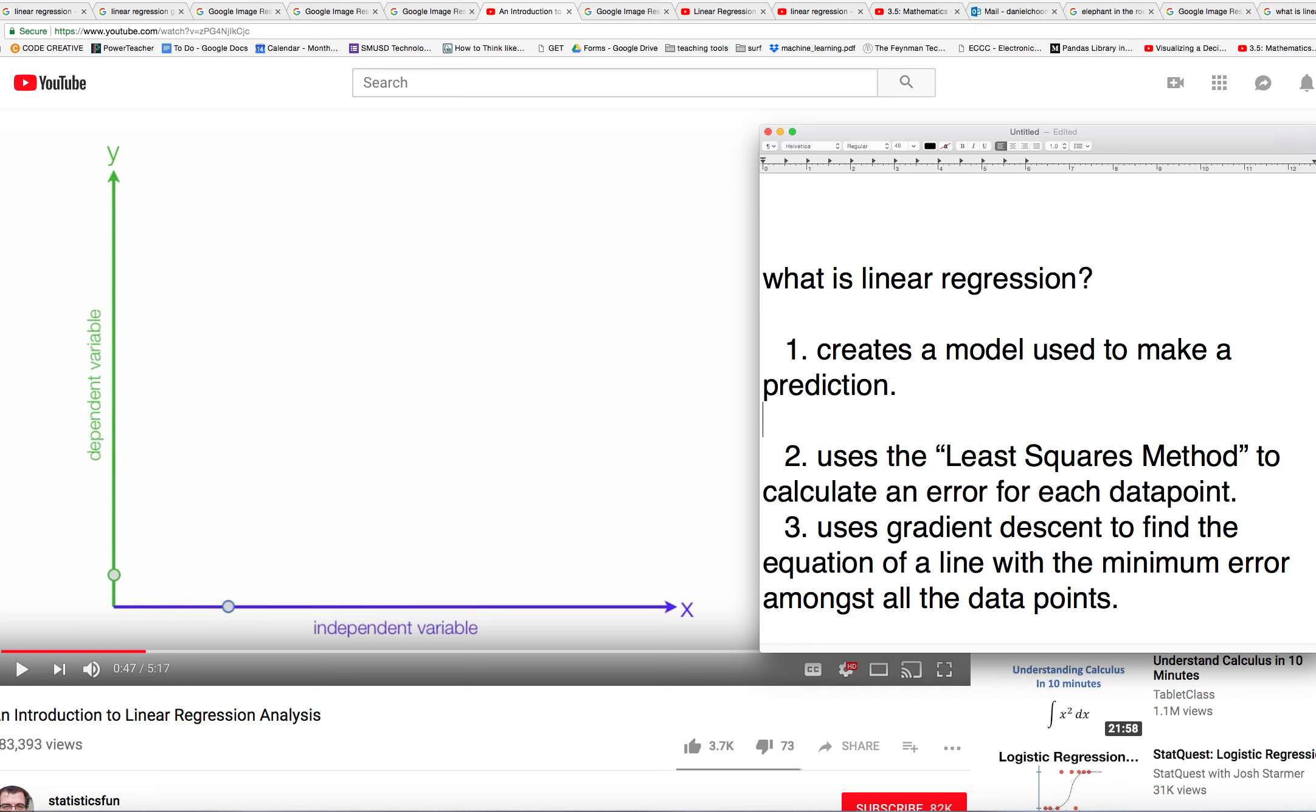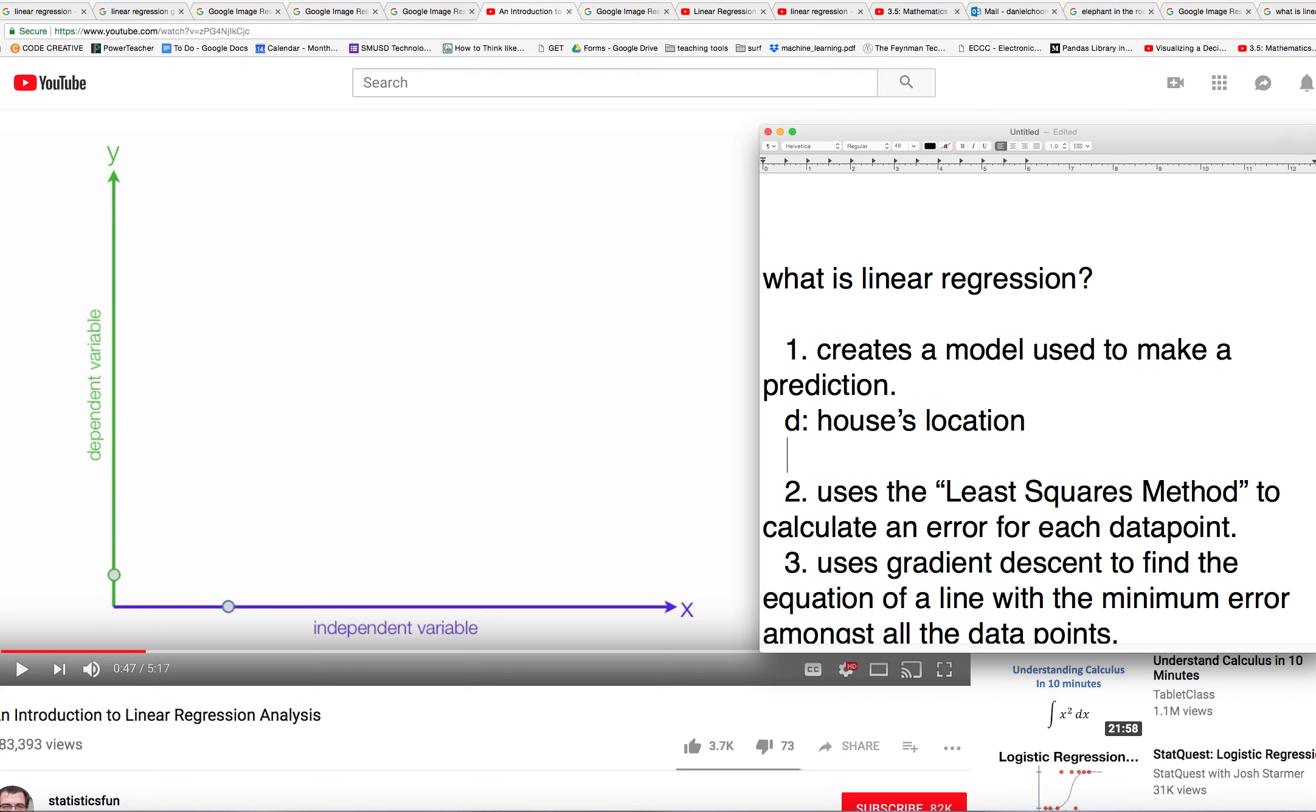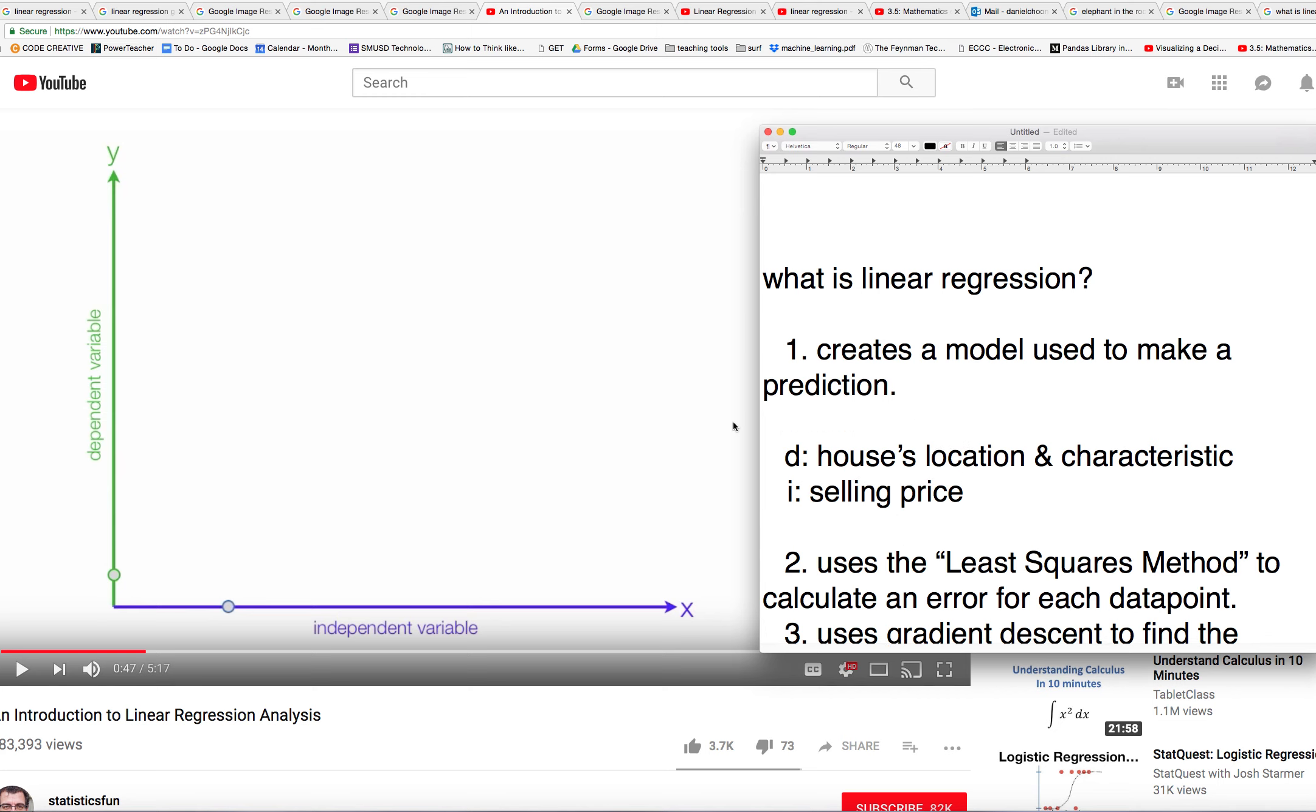Maybe for the housing example, the dependent variable would be the house's location and characteristics like number of bedrooms and bathrooms and all of that. And then the independent variable would be the selling price. So that's one example.